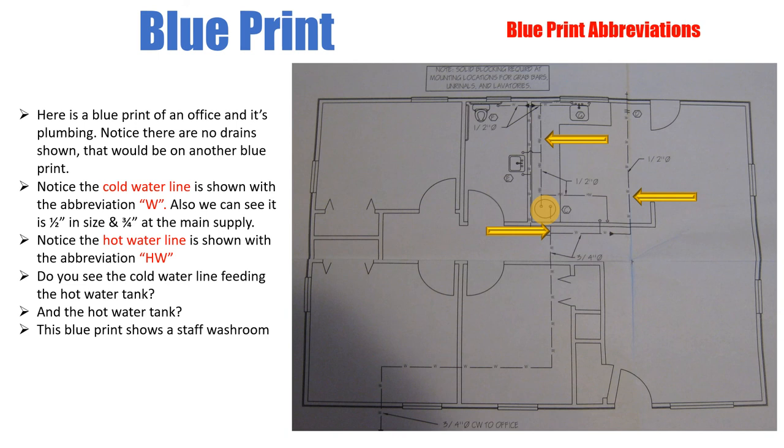So this blueprint shows a staff washroom which is right here. The door is here, the door opens up into the staff washroom. And it also shows a kitchen, kind of like a kitchen, little cafeteria eating area for employees, right there.